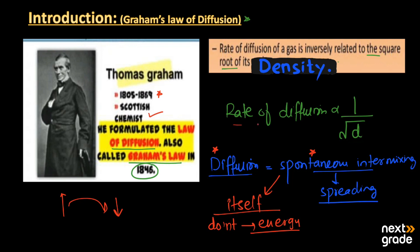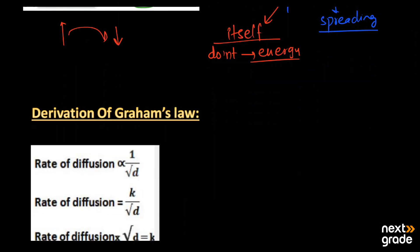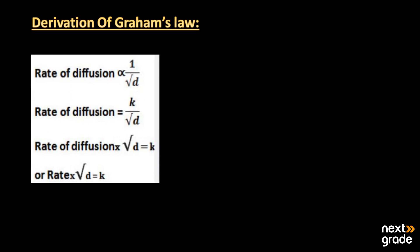Graham put forward the theory in which the rate of diffusion is inversely proportional to the density of the gases. For the derivation of Graham's law of diffusion, by removing the proportionality sign we introduce a constant k, so: rate of diffusion multiplied by the square root of density equals k.